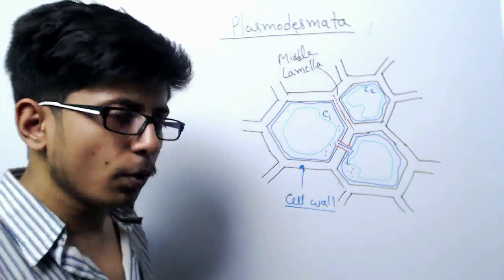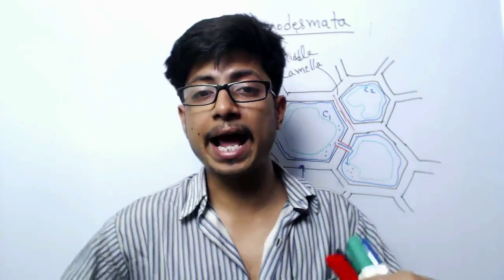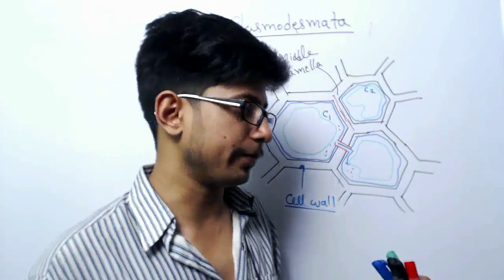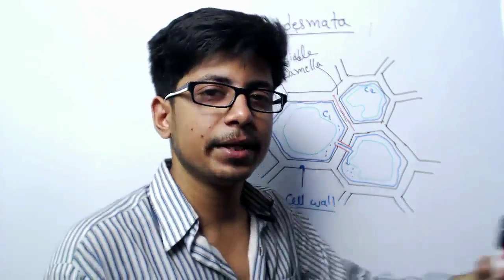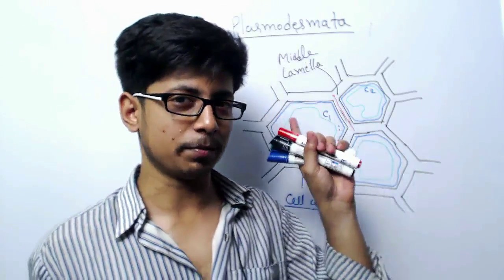In animal cells we have a transport system throughout the body — the blood circulation system. Blood acts as a transport mechanism through which all materials can move from one place of the body to the other. But in the case of plants there is no such blood transport system. So how do plant cells interact between themselves? The answer is plasmodesmata.